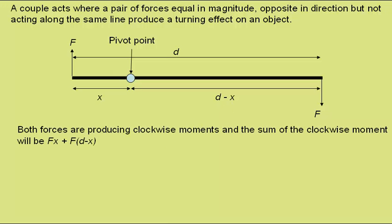Both forces are producing clockwise moments, and so the sum of the clockwise moments, or the total moment on this beam, will be Fx, the moment due to this force, plus F(d-x), the moment due to this force.